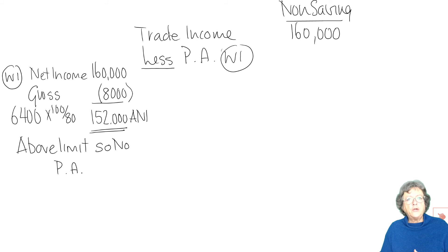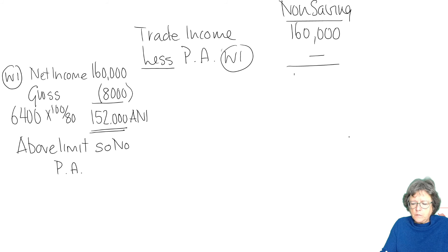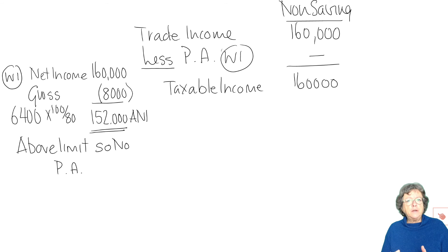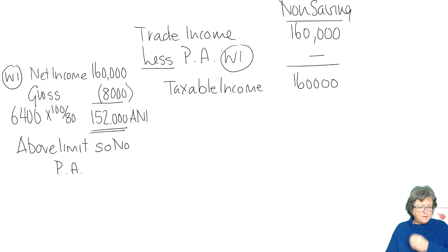You can see from his earning £160,000 that he's not going to get a personal allowance, but don't ignore the working — there will be marks for proving that the rule applies. Don't just think 'I can see it doesn't apply' and move on. Show the calculation, put at the bottom 'he's above the limit so he gets no personal allowance', and you'll get marks for that.